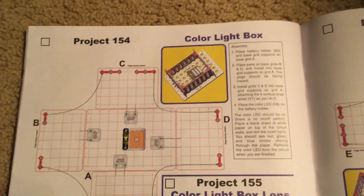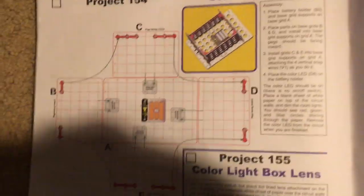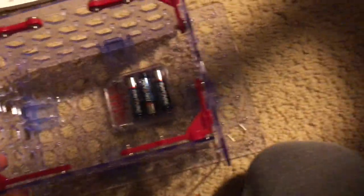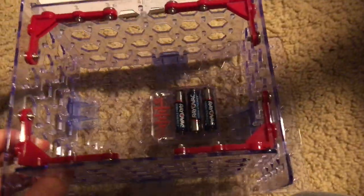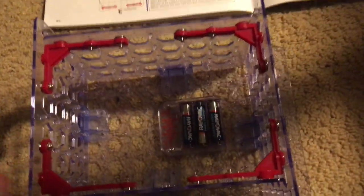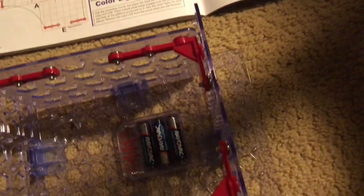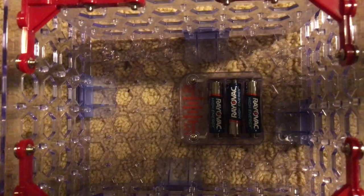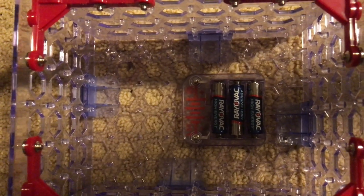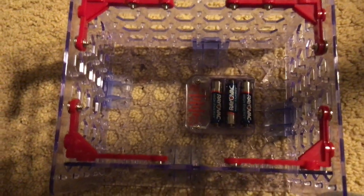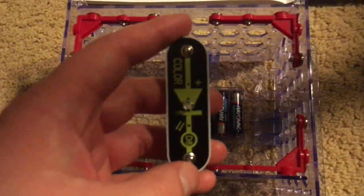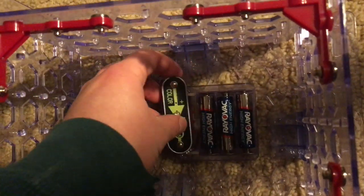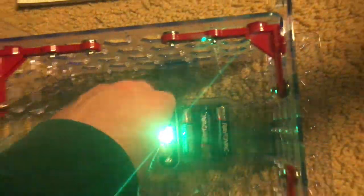Project 154, color light box. We will assemble all four base grids in a vertical position on the main grid. You will see that the battery holder is separate, not connected to any of the small grids. We are going to place the color LED on the battery holder and it should light up.